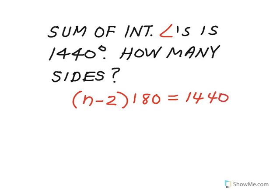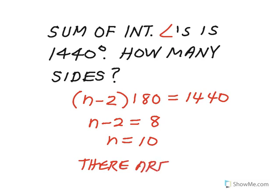So I want to isolate and solve for n. So first I'll isolate the n minus two. I'll divide both sides by 180, and I'll get n minus two equals eight. So then I know that n equals ten. So that means there are ten sides. And it's really just that simple.